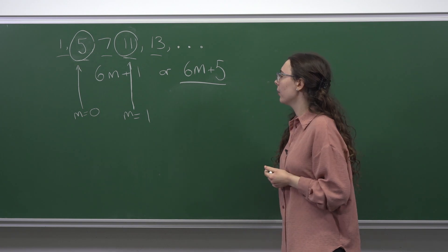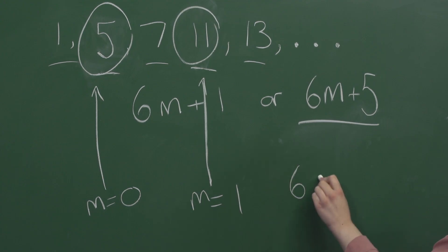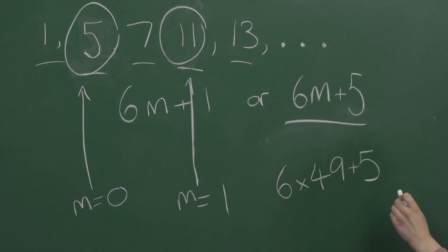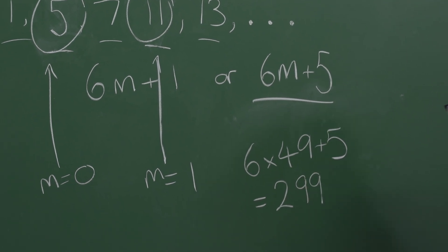So if we're looking for the fiftieth term, then we're really looking for m equals 49. And six times forty-nine plus five is two hundred and ninety-nine.